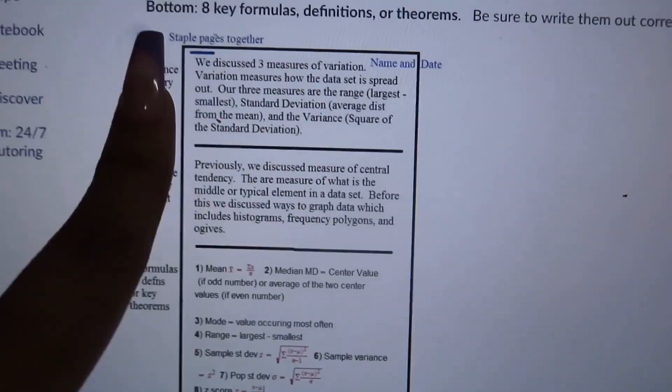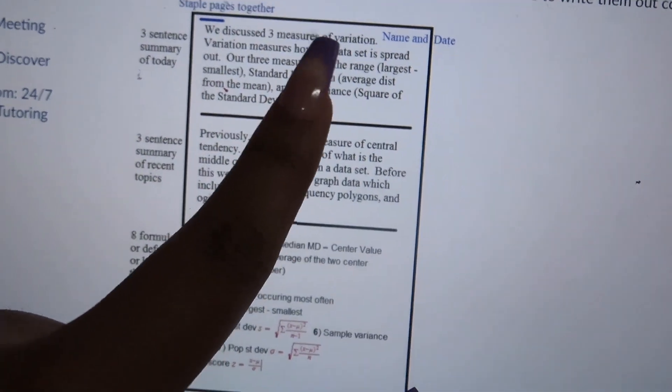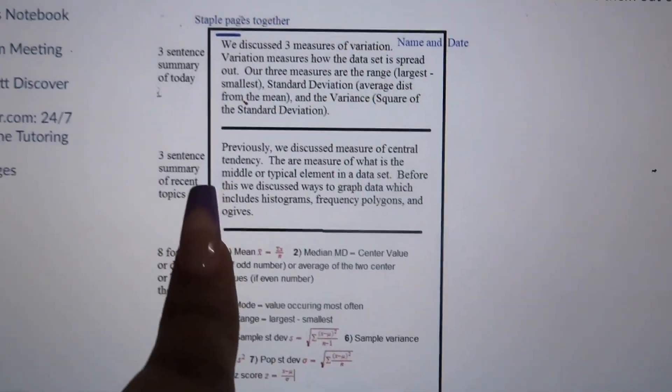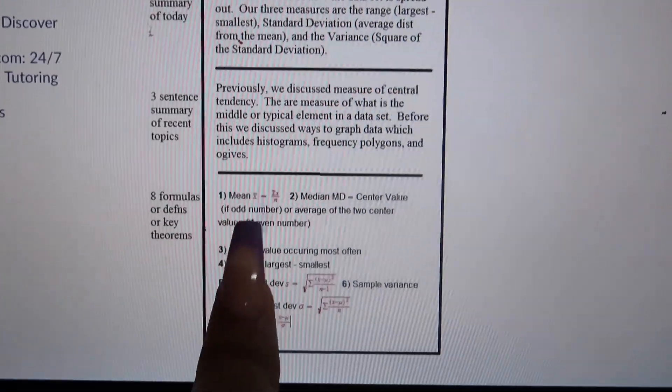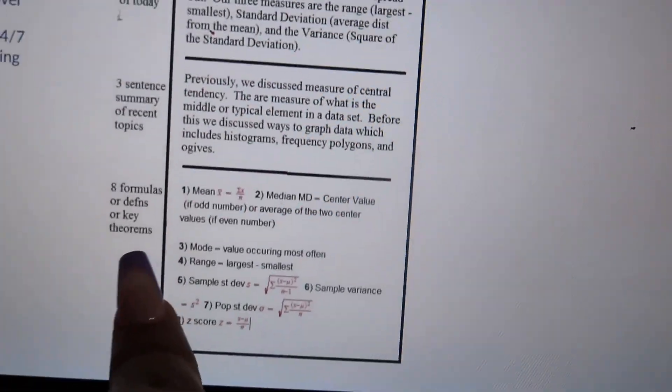Staple on the left and put your name and date on the right side. Three sentences on what we're doing recently, bottom three key formulas and definitions of theorems — be sure to write them out correctly. It might feel like a lot right now, but low-key I feel like this is a good idea, especially for studying and knowing what we're actually going over. So I'm going to show y'all what it looks like — kind of an example. Three sentence summary of today: we discussed three measures of variation. And then like eight key formulas and definitions. My question is, will we know eight key formulas each day? I have so many questions, but I feel like this is a good idea.